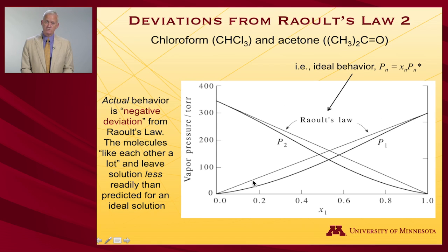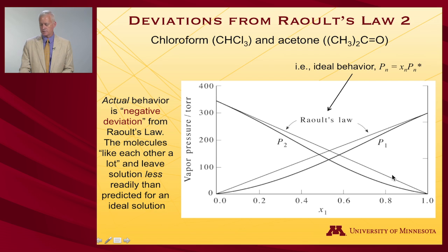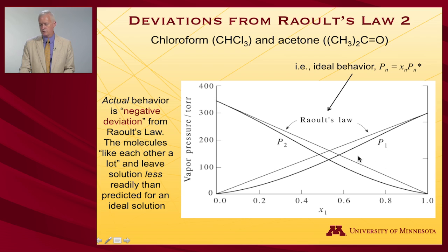In addition to positive deviations from Raoult's law, it's also possible to have negative deviations. Here's another pressure-composition diagram, now for chloroform and acetone — more pleasant-smelling substances, frankly. Raoult's law is shown here; were it to be followed, you would expect to see these vapor pressure lines as a function of composition — that would be the ideal behavior. Instead, the vapor pressure is lower than would be predicted for each of the two components at a given composition.